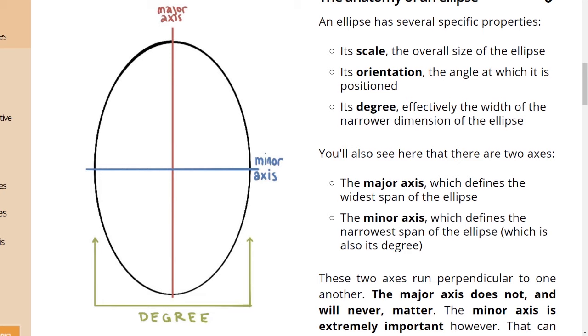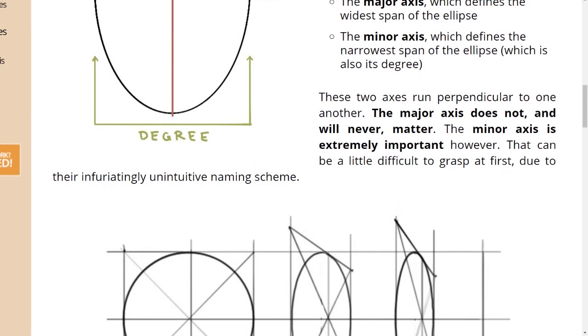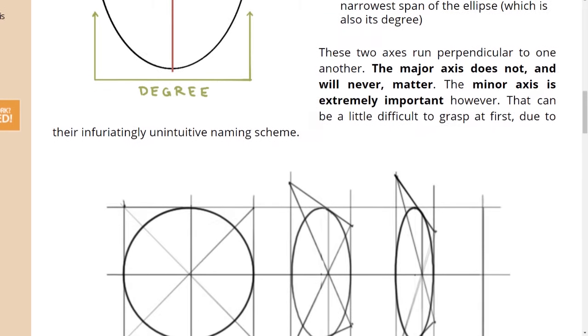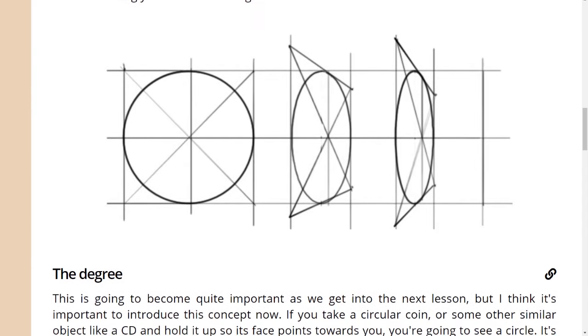There's a picture. Take it in. These two axes run perpendicular to one another. The major axis does not and will never matter. The minor axis is extremely important, however. That can be a little difficult to grasp at first, due to their infuriatingly unintuitive naming scheme. So we don't care about majors, we care about minors.